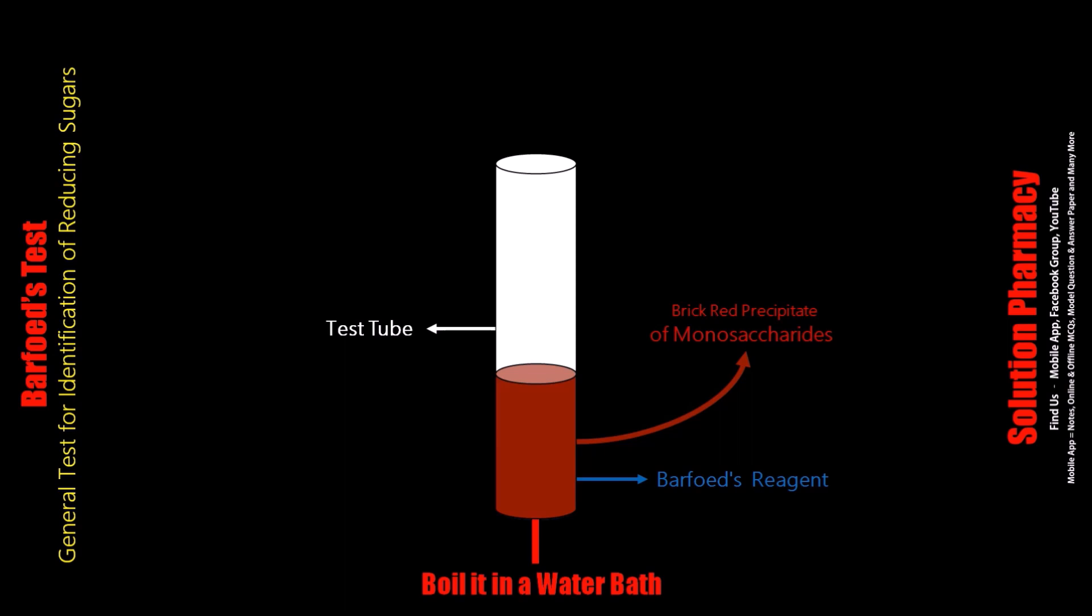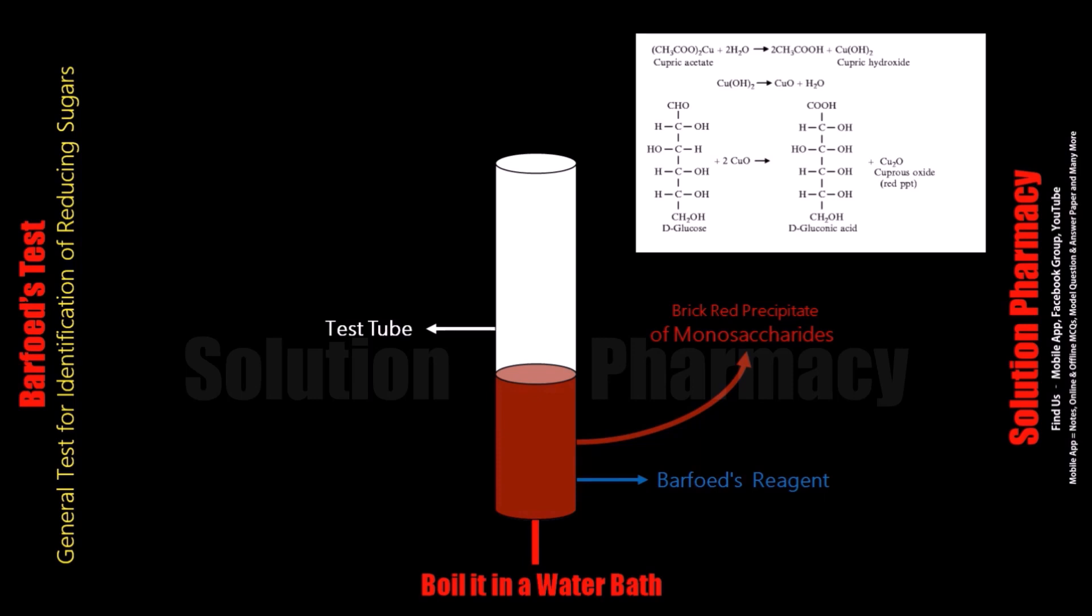The principle of this test is that reducing monosaccharides present in our sample cause reduction of copper under acidic conditions. After reduction, red precipitate of cuprous oxide is formed within 2 minutes. In this way we can detect the presence of reducing monosaccharides in any sample by performing Barfoed's test.